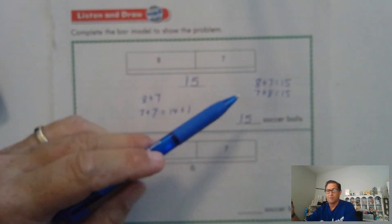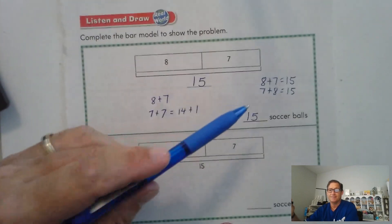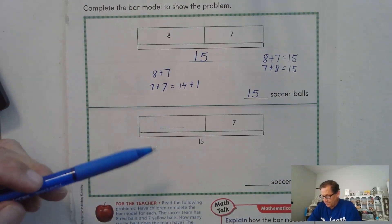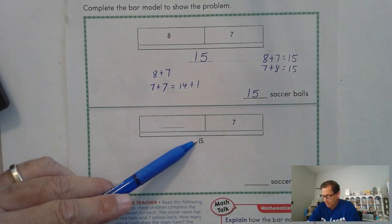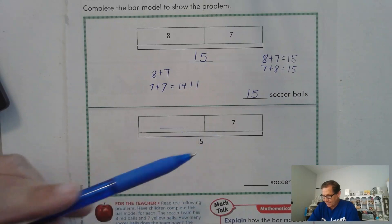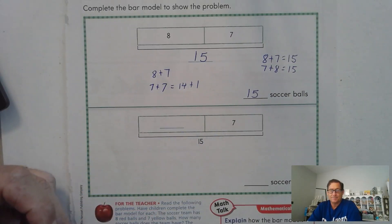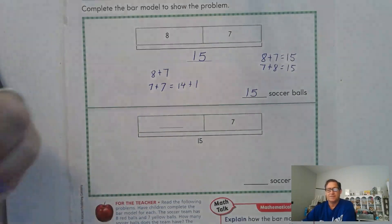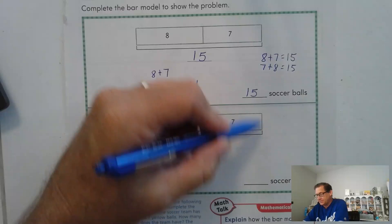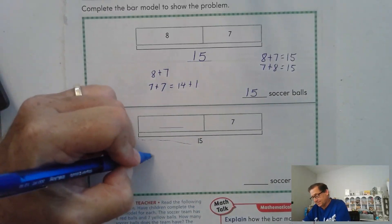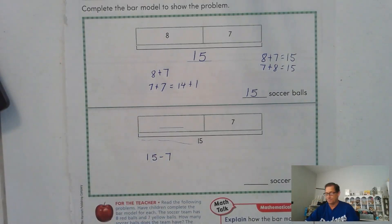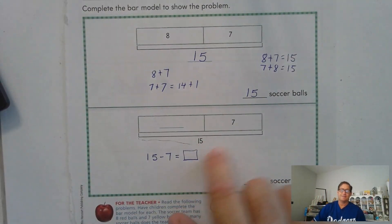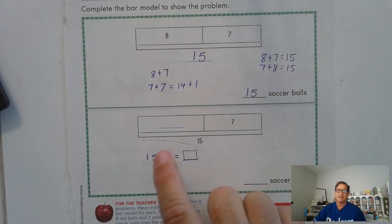Now for these two addition problems, there are also two subtraction problems that are related. Listen to this question: the soccer team has 15 balls inside the locker room. The children took the seven yellow balls outside. How many soccer balls were inside? So we have this missing number. The opposite of addition is subtraction. We know that these two boxes combined is 15. We have one of the add-ins — seven. We have to find the missing one. So we take 15, subtract seven, and that gives us the missing add-in.